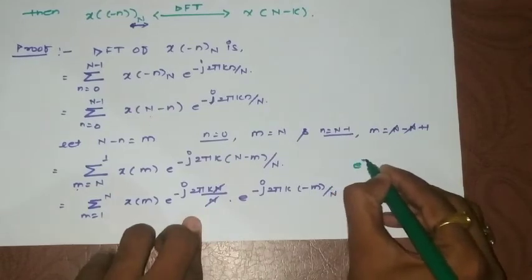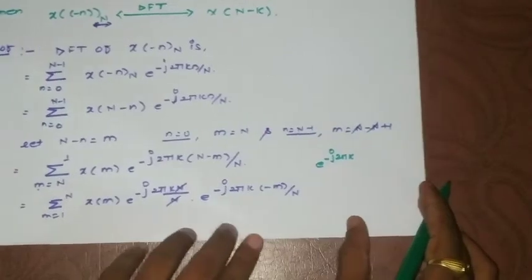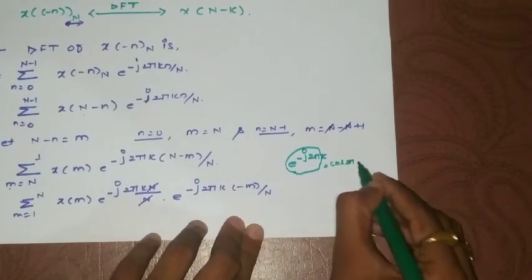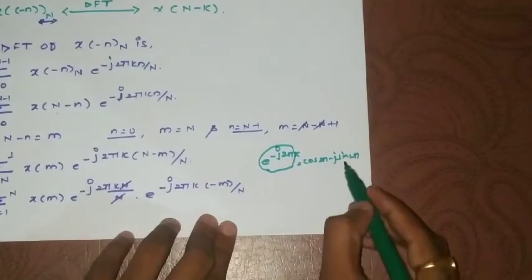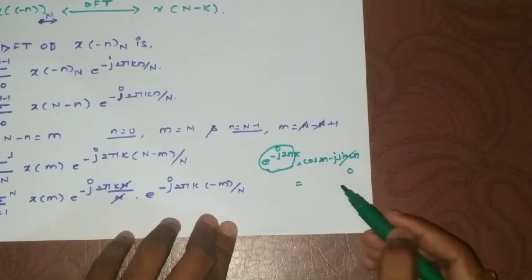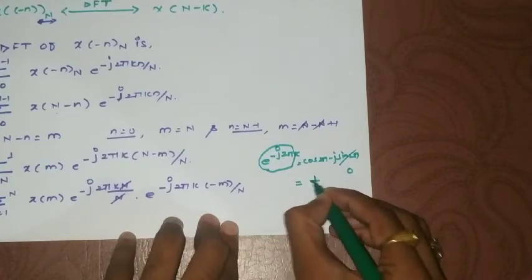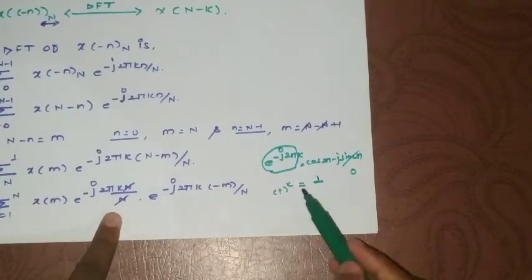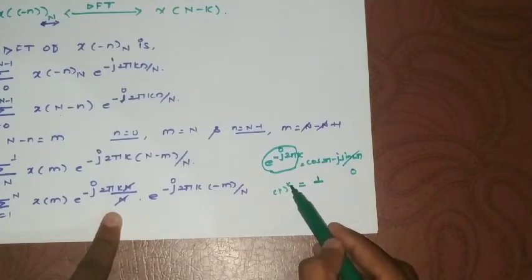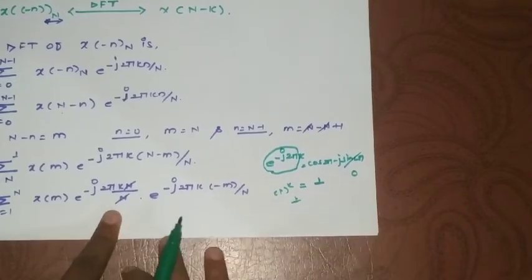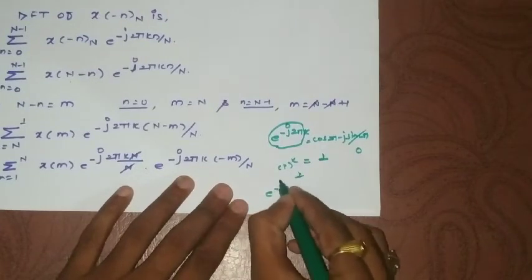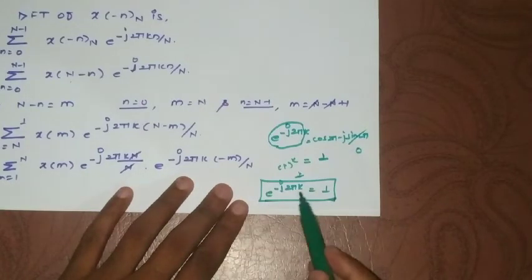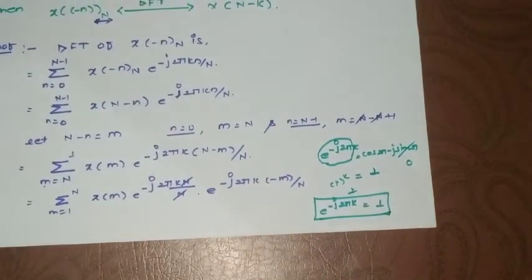The key result is that e^(-j2πk) = cos(2π) - j·sin(2π). We know sin(2π) = 0 and cos(2π) = 1, so e^(-j2πk) = 1^k = 1, regardless of the integer value of k. This important result — e^(-j2πk) = 1 — will appear in many subsequent property proofs.